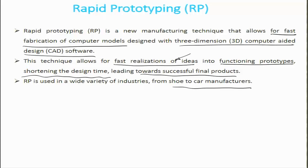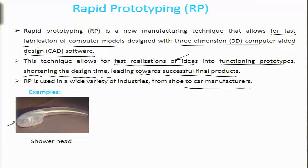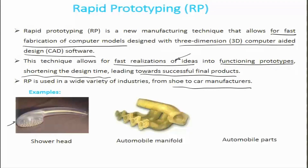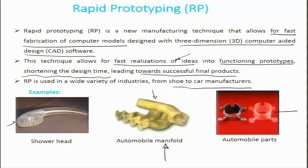Some examples include a shower head which has been 3D printed using polymer — an extremely complex shape — showing how convenient it is to hold, the extent of water pressure developed, and how well the water can be split. Another example is a 3D print of an automotive manifold, just prior to final design, showing aspects related to flow and fitment, since this part fits along with the engine. There are other automotive parts where 3D prototyping is used quite a bit to visualize how the prototype would look from design stage to component stage.